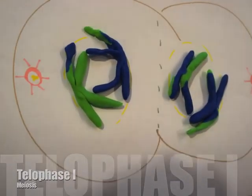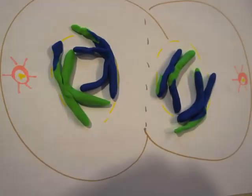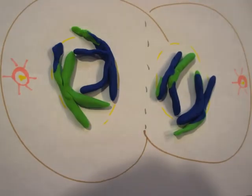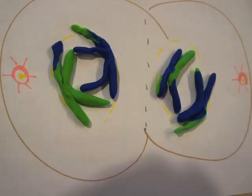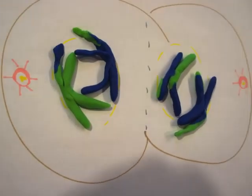Telophase I. As you can see, the result is two haploid cells that contain double chromosomes, but there are still half as many chromosomes as in the original cell. The chromosomes do not condense into chromatin at this point, however. Instead, meiosis II begins.